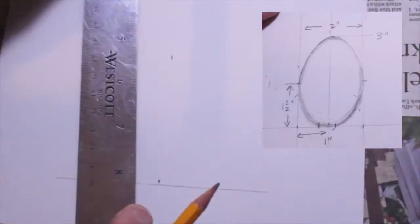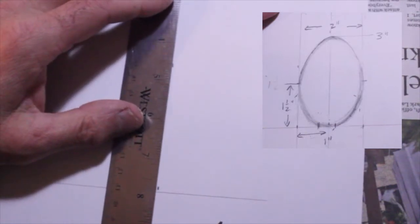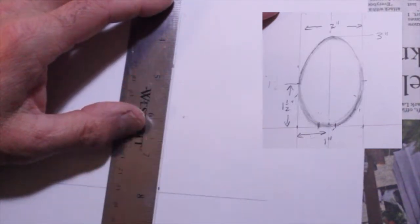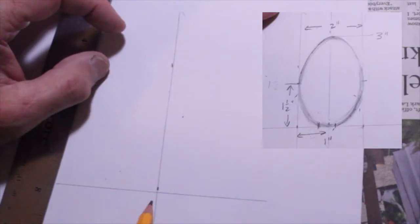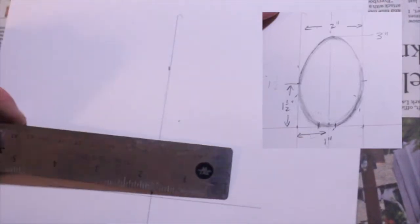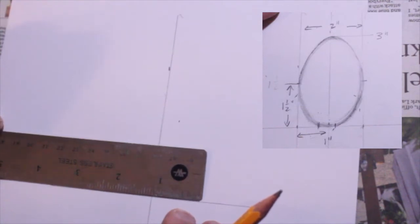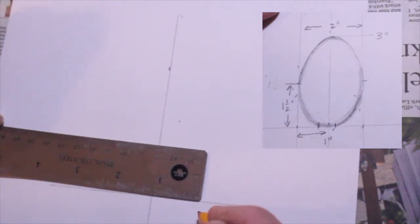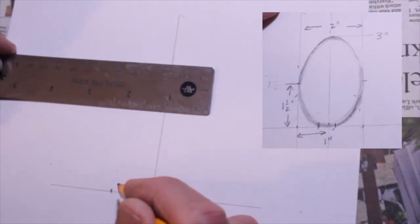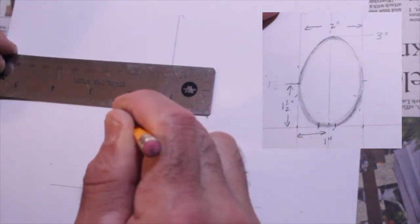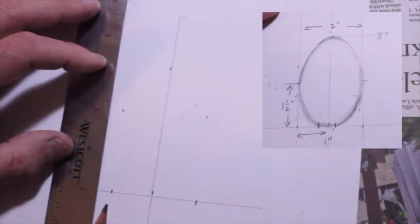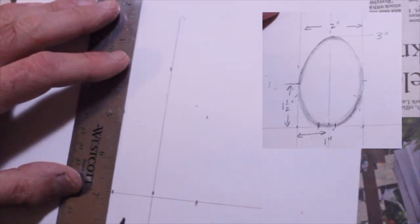Now I have a midline. My egg is going to be three inches tall by two inches, one inch on each side, and I will know where my dimensions are on each side for my egg to come up.